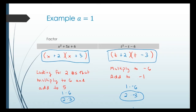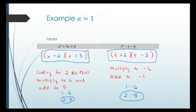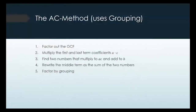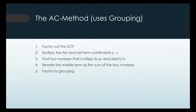Now the AC method. The AC method uses the grouping process. First you factor out your greatest common factor, then you multiply the first and last term together — the A and the C terms. You're still looking for two numbers that multiply to that product and add to the middle. The difference is that after finding those numbers, we rewrite the middle term as the sum of the two numbers, giving us four terms so we can do factor by grouping.